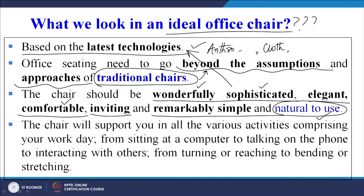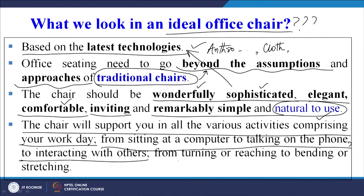The chair should support you in all the various activities comprising your day-to-day work. Sometimes while seated we need to bend, get up and sit back, or reach for a file or object. The chair must support us in all those motions — from sitting at a computer to talking on the phone, interacting with others, turning, reaching, bending, or stretching. So that is basically the requirement for an ideal chair.